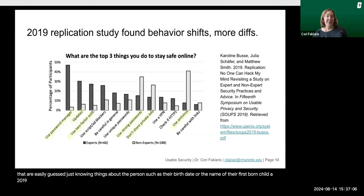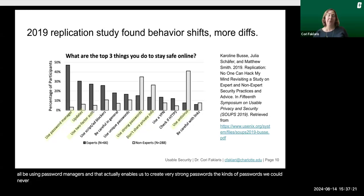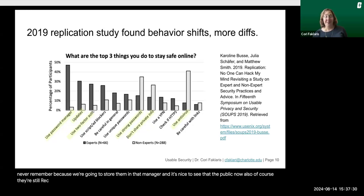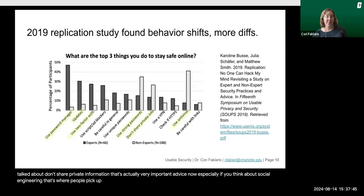A 2019 replication study actually found some behavior shifts. Now experts say we should all be using password managers, which enables us to create very strong passwords — the kinds of passwords we could never remember — because we're going to store them in that manager. It's nice to see that the public now also recommends antivirus, but also agrees on using strong passwords. They also talked about not sharing private information, which is very important advice, especially if you think about social engineering, where people pick up on that private information to try to convince you to give up your account credentials.